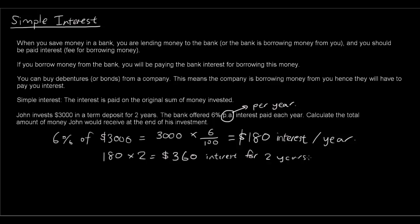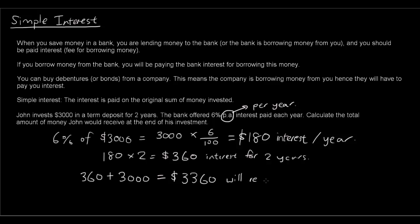So how much money would John receive at the end of the investment? He will get the three hundred and sixty dollars in interest plus the three thousand dollars he invested in the beginning — back from the bank. So at the end of his investment, he will receive three thousand three hundred and sixty dollars.